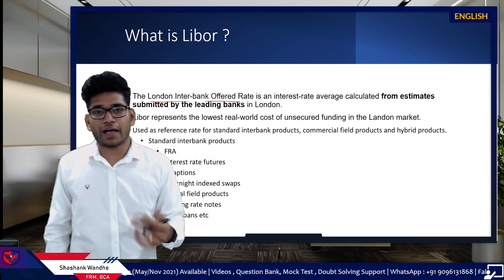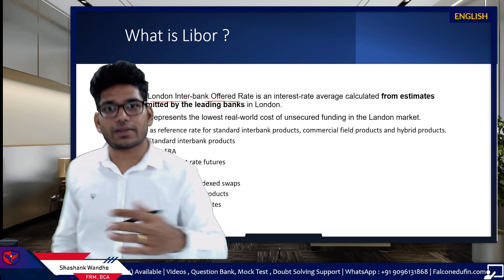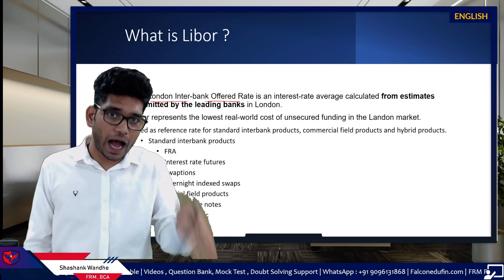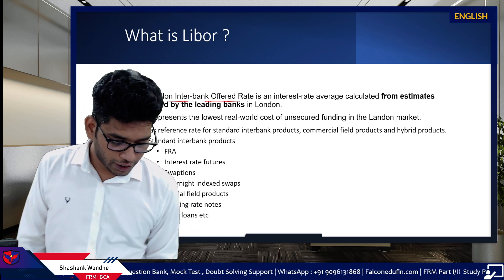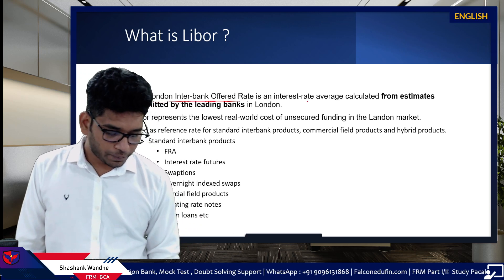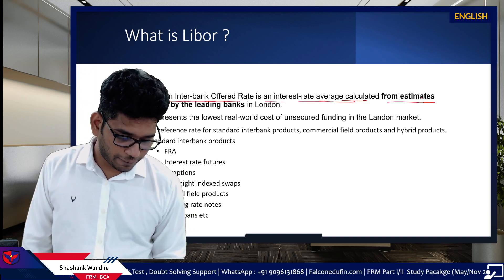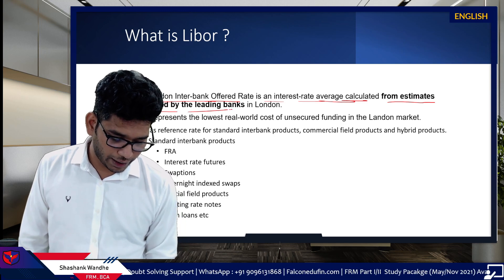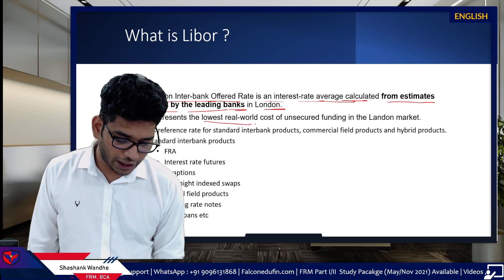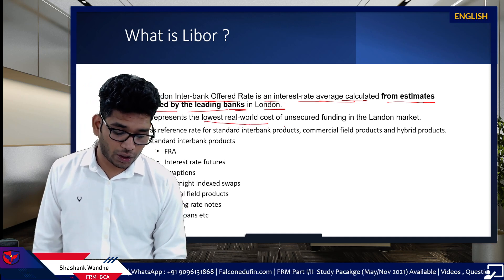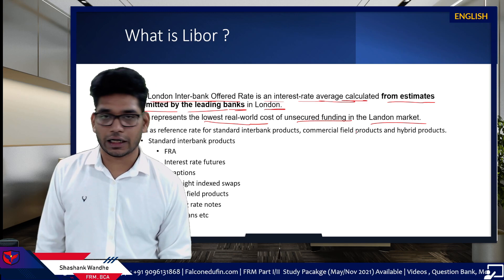LIBOR is an interest rate average calculated from estimates submitted by the leading banks in London. LIBOR represents the lowest real-world cost of unsecured funding in the London market.